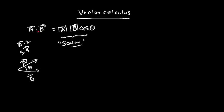The dot product of two vectors a-bar and b-bar is defined as the product of the magnitudes of a-bar and b-bar and the cosine of the smallest angle between the two vectors, because theta is defined as that smallest angle.